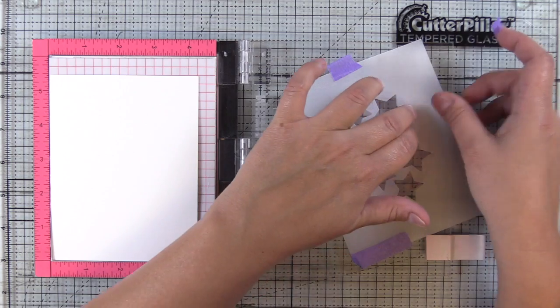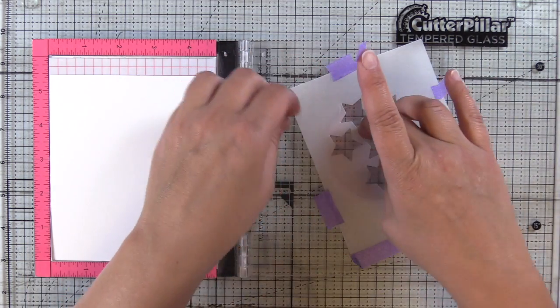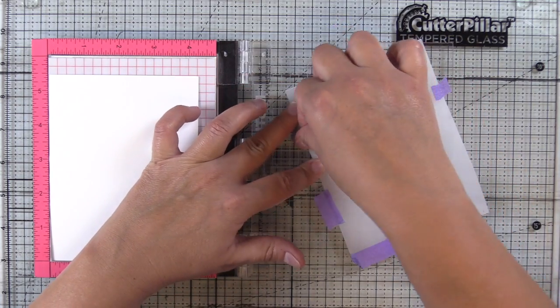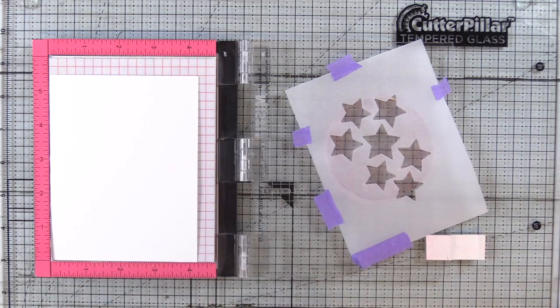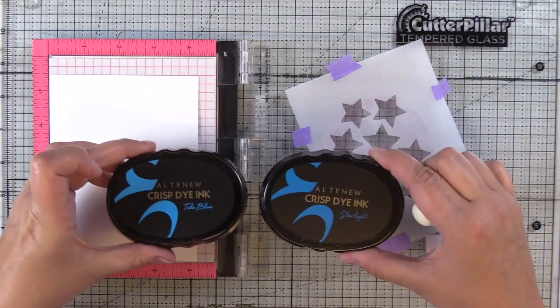I'm just making sure that my stencil is laying flat over my solid stamp. Now if you don't have any solid stamps like this, take a look through your stash because you could use the backside of one of your stamps as well. That will help you stretch your supplies and get a little more mileage out of the things you have.